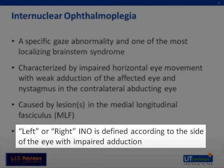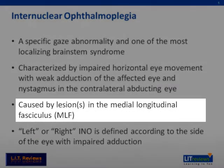So right INO means, on looking to the left, there is adduction failure in the right eye and associated nystagmus with the left eye abduction. The clinical signs of INO localize the lesion to the brainstem, specifically to the medial longitudinal fasciculus.